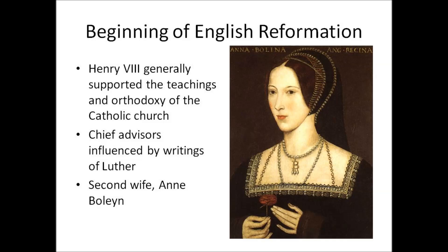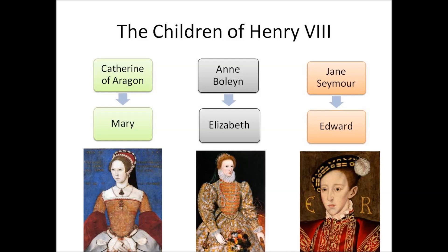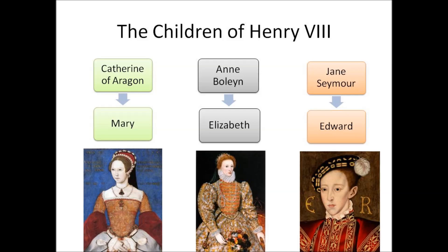Once he's broken from the church, he's going to be able to divorce Catherine and marry his second wife, Anne Boleyn, who we have a portrait of up on the screen. Anne is going to be executed based on trumped-up charges of infidelity and treason, which most historians consider to be false. After the death of Anne, he will go through four more wives. However, he will only have three children — he will be married six times but only have three children, and those three children will come from his first three wives. Catherine of Aragon will give him Mary, Anne Boleyn will give him Elizabeth, and Jane Seymour will give him Edward. All three of his children will one day sit on the throne of England, and they're all going to interpret or react to the Reformation in very different ways.